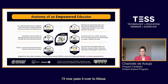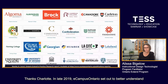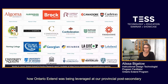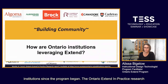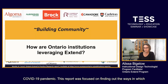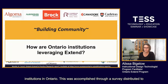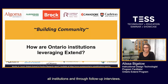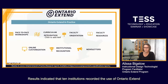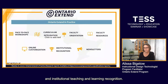In late 2019, eCampus Ontario set out to better understand how Ontario Xtend was being leveraged at provincial post-secondary institutions since the program began. The Ontario Xtend in Practice Research Report was published in 2020, just prior to the onset of the COVID-19 pandemic. This report focused on finding out the ways in which Ontario Xtend modules and resources are being used by post-secondary institutions in Ontario, accomplished through a survey distributed to all institutions and follow-up interviews. Results indicated that 10 institutions reported the use of Ontario Xtend materials for course curriculum, professional learning opportunities, and institutional teaching and learning recognition.